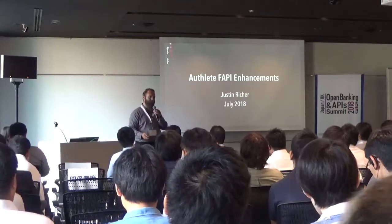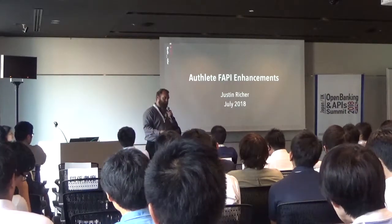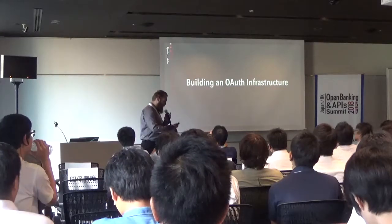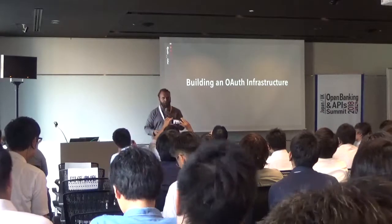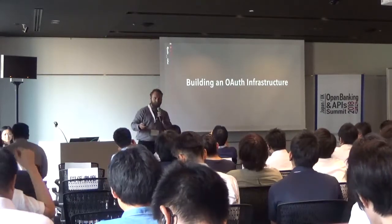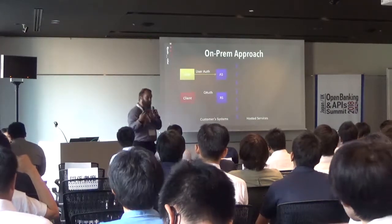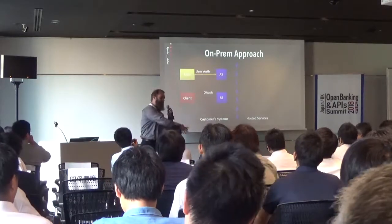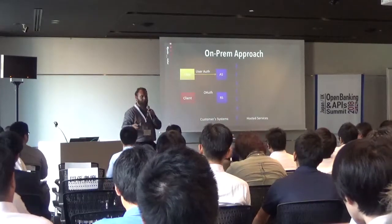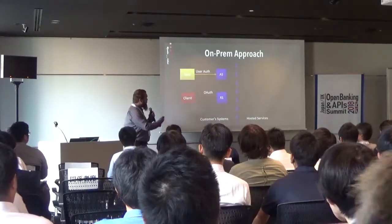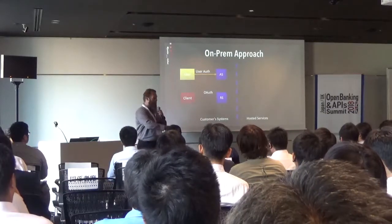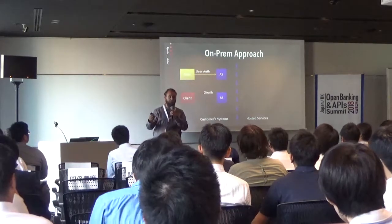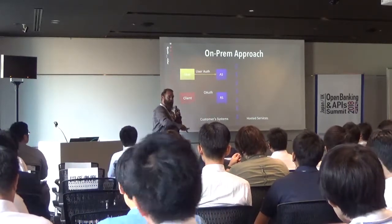One of the projects we've been doing recently has been enhancing the off-fleet server — the authorization server — to support the FAPI protocol. I want to give you a little bit of background on how the off-fleet system works, because it is fairly different from a lot of other implementations. When you go out to build an OAuth infrastructure, traditionally you've got one of two major choices: you can host everything on-premises, build up your server, and have everything inside your security domain.